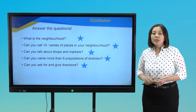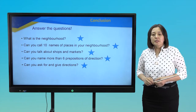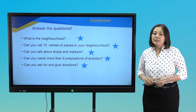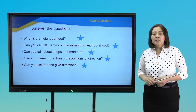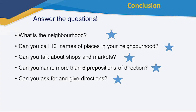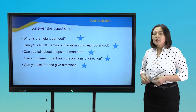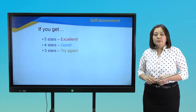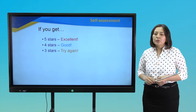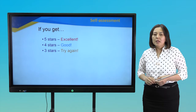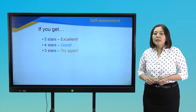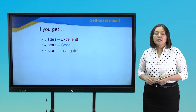Now, let's sum up. Today you have learned a lot of information about neighborhood. Look at the questions and try to answer them correctly. If you answer correctly, you can get a star. Read and think. What is the neighborhood? Can you name ten places in your neighborhood? Can you talk about shops and markets? Can you name more than six prepositions of direction? Can you ask for and give directions? If you get five stars, excellent. Four stars, good. Three stars, try again. I hope all of you have five stars. If you had less, watch the video again and learn the words. Only hard work will bring you success. That's all, boys and girls. Thank you. Goodbye.